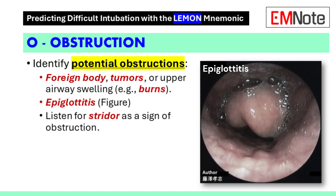Step 4: Obstruction. The fourth component involves assessing for any signs of obstruction. Conditions such as laryngeal trauma, foreign body airway obstruction, edematous tissue, or burns can complicate intubation. Identifying these conditions early allows providers to prepare for potential difficulties.